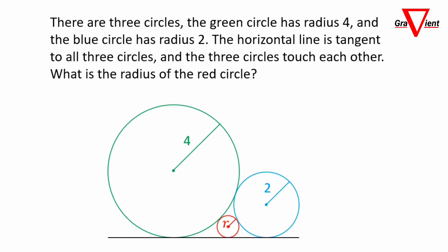Consider the following diagram. There are three circles: the green circle has radius 4, the blue circle has radius 2. The horizontal line is tangent to all three circles, and the three circles touch each other. What is the radius of the red circle?